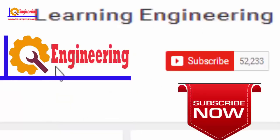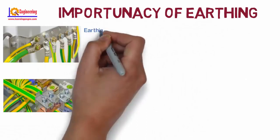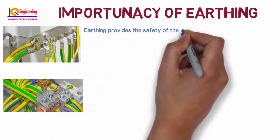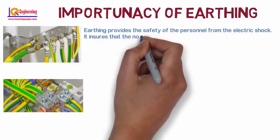If you like this video, please subscribe to our channel Learning Engineering. First, we see the importance of earthing. Earthing provides the safety of personnel from electric shock. It ensures that non-current carrying parts such as equipment frames are always safe at ground potential, even though the insulation fails.